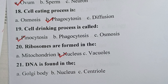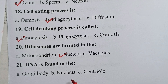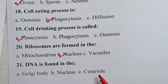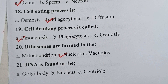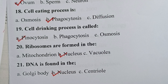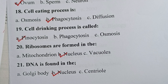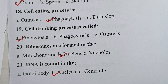Question twenty-one: DNA is found in the — is it Golgi body, nucleus, or centriole? The correct answer is nucleus. DNA, which is a genetic material, is found inside the nucleus of the cell.